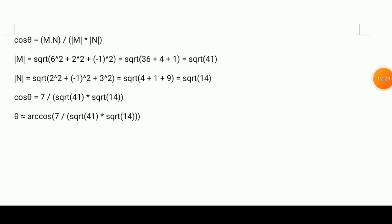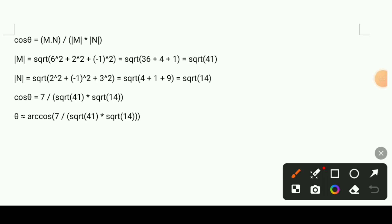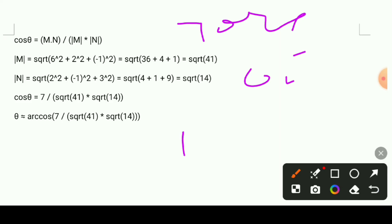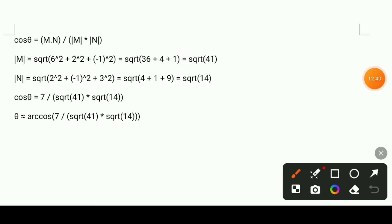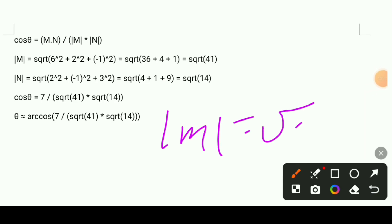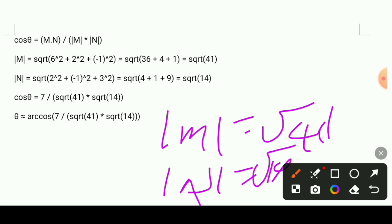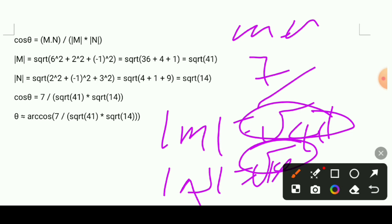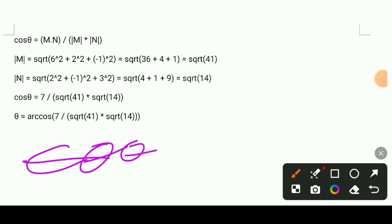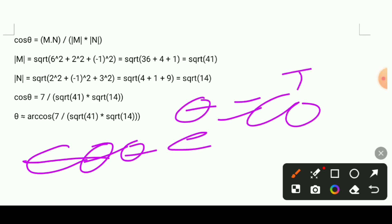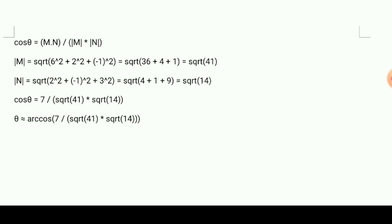The magnitude of m is the square root of 6 squared plus 2 squared plus 1 squared. The magnitude of n involves 1 squared plus 4 squared terms. After computing the magnitudes, we take the cosine inverse to find the angle theta. That completes the chapter 1 physics review.